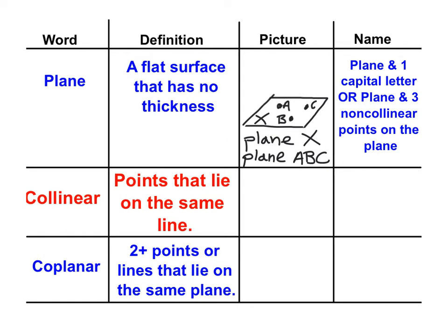The next word that we're going to define here is collinear. And points are collinear when they lie on the same line. One good way to remember this definition is the word co actually just is a prefix that means same. So collinear are points that lie on the same line. So I'm going to go ahead and draw a line here.